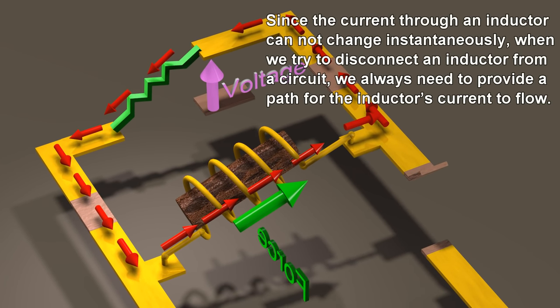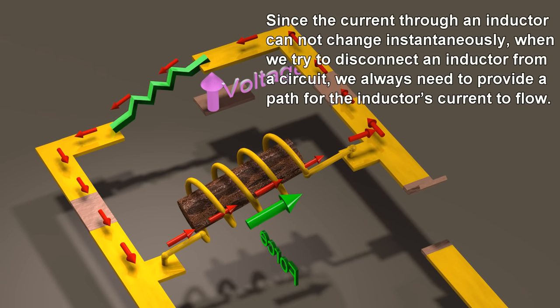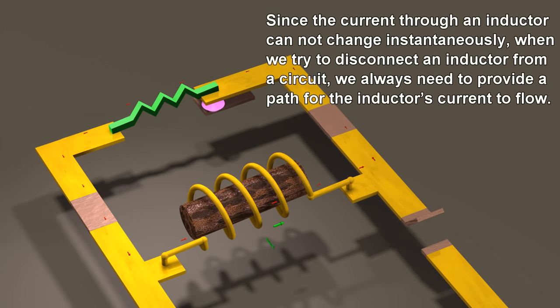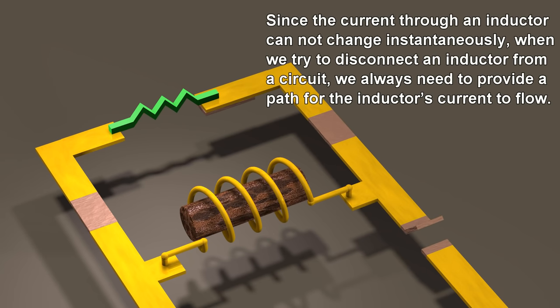Since the current through an inductor cannot change instantaneously, when we try to disconnect an inductor from a circuit, we always need to provide a path for the inductor's current to flow.